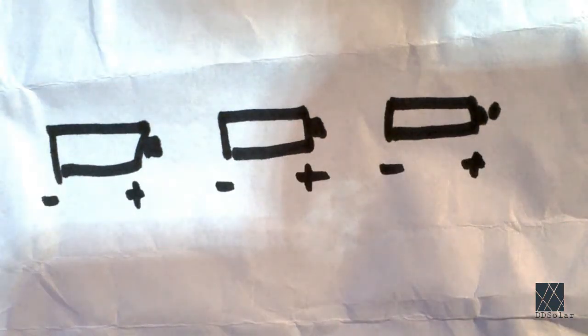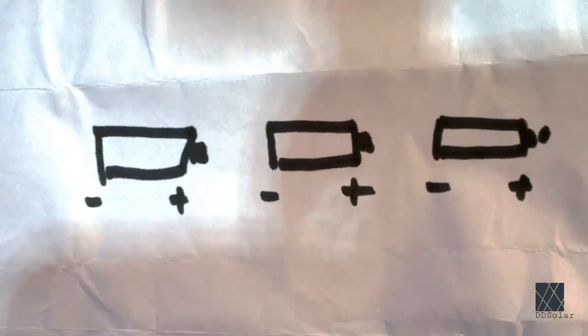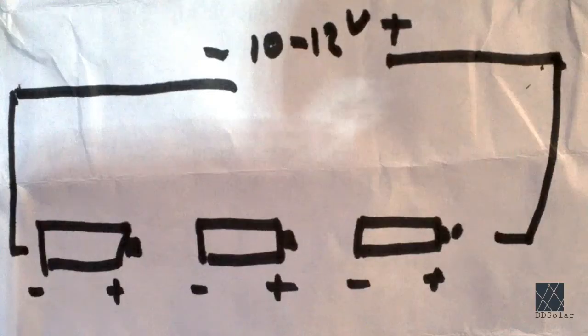Now I've added the positive and negative so you can see which side of the battery is positive and negative. Now let's assume these are lithium ions, maybe 18650s, and you put them in series to get the full voltage, which is right around 10 to 12 volts. And there you go, 10 to 12 volts. They're in series.